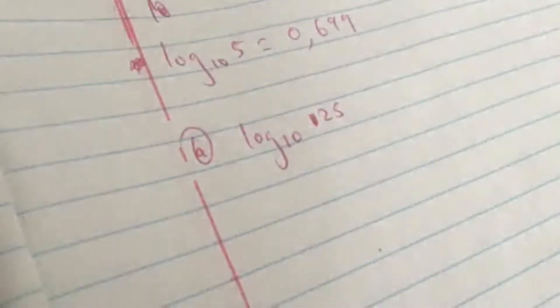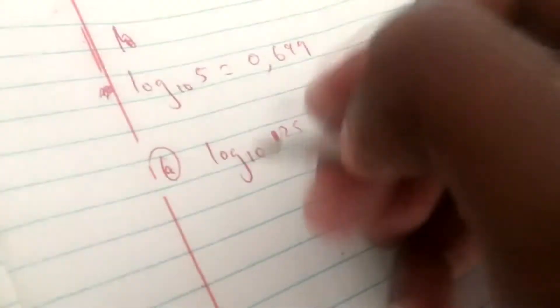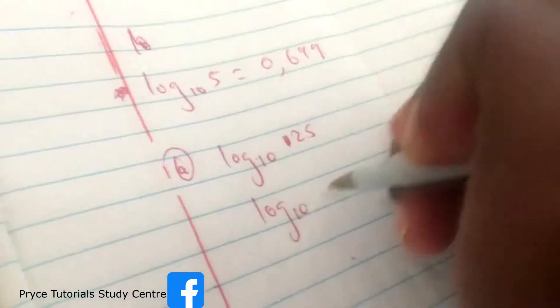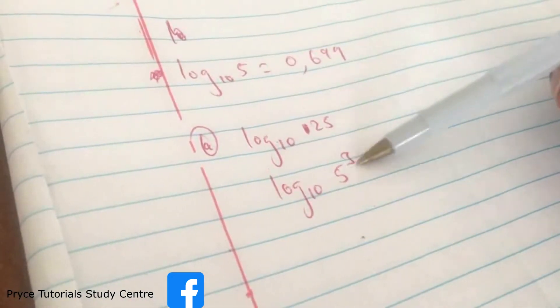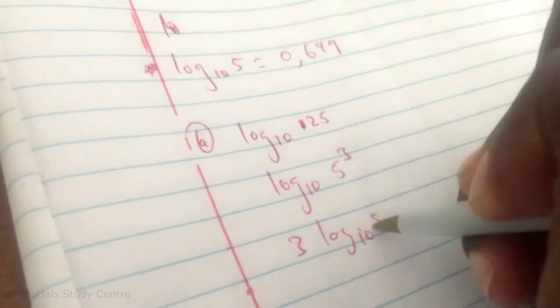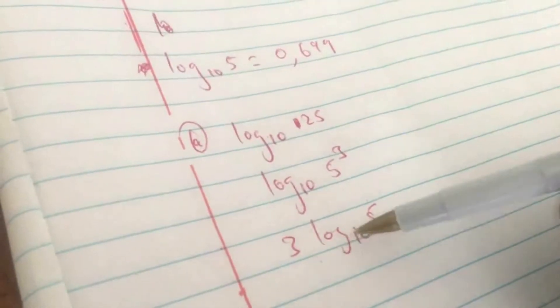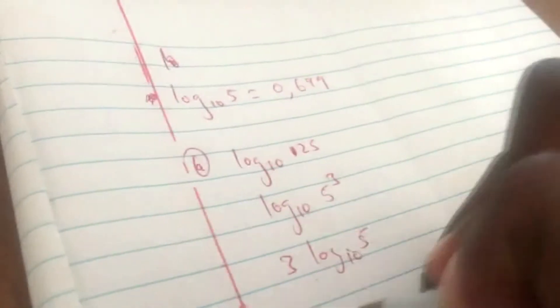Now 125, you can express 125 as 5 to the power 3, so you have log base 10 of 5 to the power 3. Now if you have a 3 here, you drop the 3 such that you have 3 times log base 10 of 5. Now the value for log base 10 of 5 is 0.699.